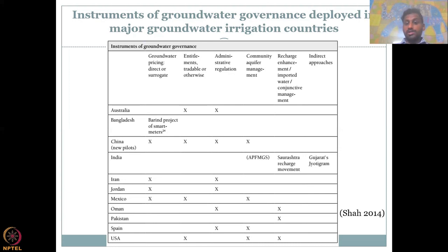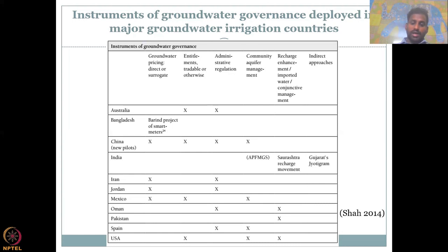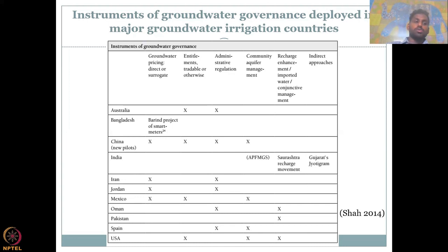They also have recharge enhancement and conjunctive groundwater-surface water management plans, such as the example given in the Saurashtra Recharge Movement. Indirect approaches are also there, such as Gujarat's Jyotigram scheme. Progressive states that value groundwater more have put in a lot of measures to increase groundwater recharge, reduce consumption, and monitor groundwater use.